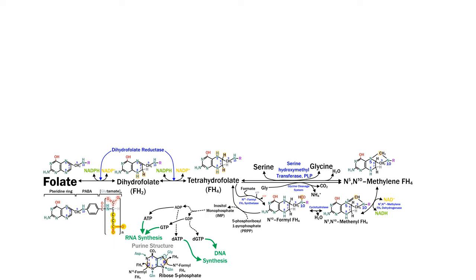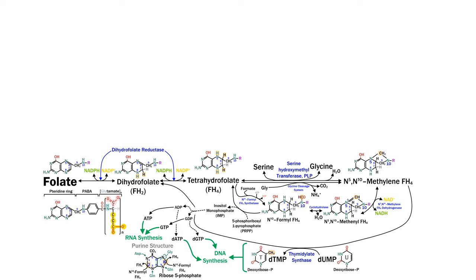Now we're at methylene tetrahydrofolate, and we can do another very important donation via thymidylate synthase, which adds a carbon group to deoxyuracil monophosphate to make deoxythymidine monophosphate — the equivalent base to uracil in DNA. Without this function, the cell can't make thymidine and might use uracil instead, which needs to be repaired and can cause DNA damage.